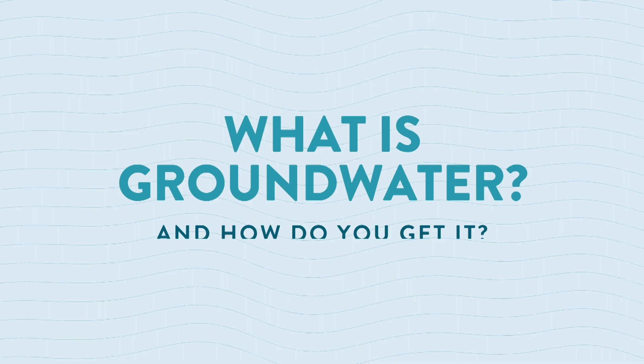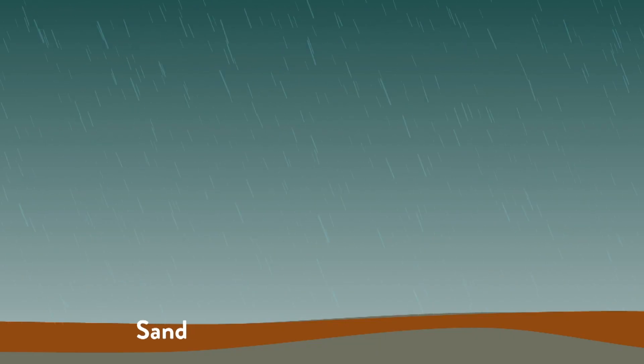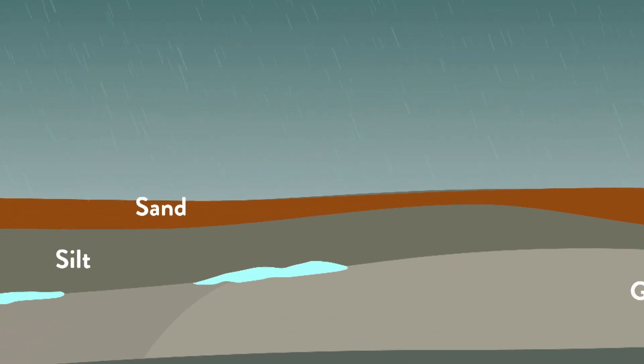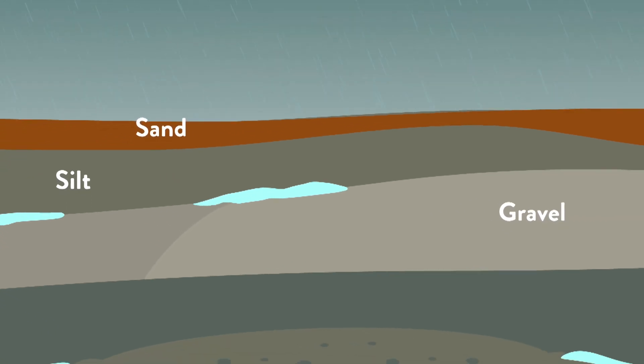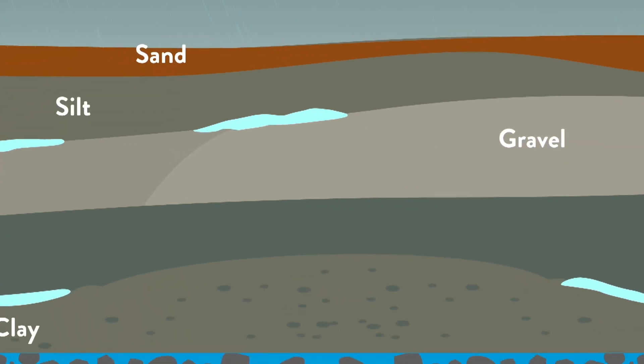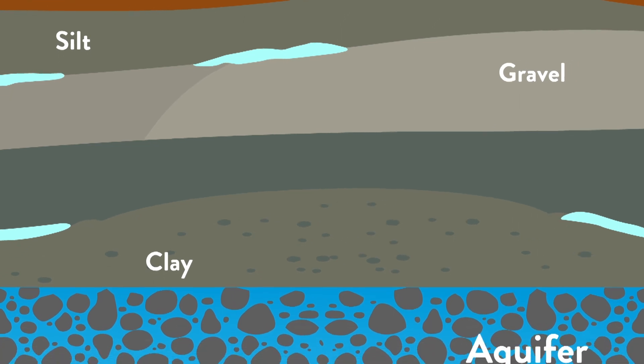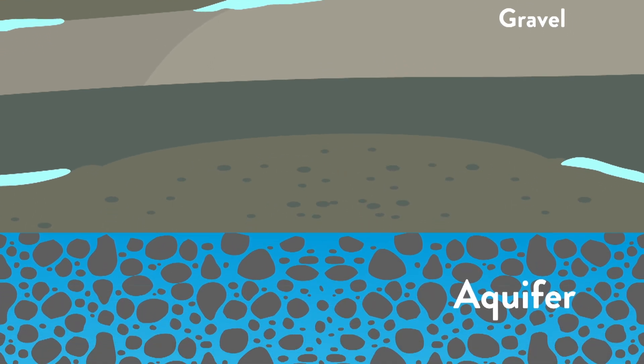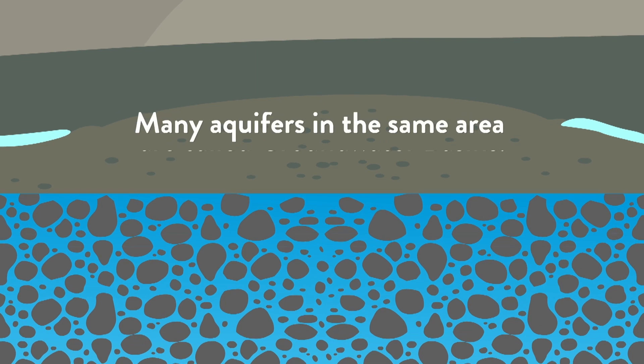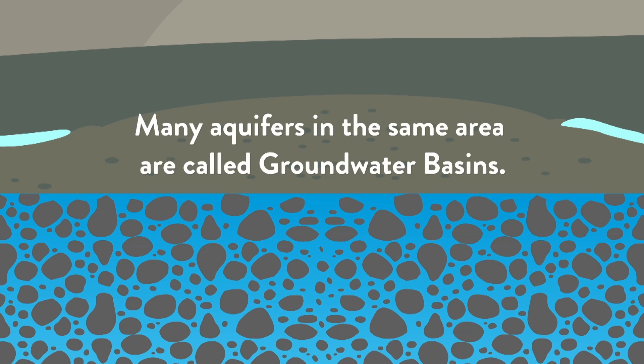What is groundwater? Water from snow and rain seeps into the ground between layers of gravel, sand, rocks, and clay that form very small pockets where water is stored, almost like in a thick wet sponge. These underground sponges are called aquifers, and many aquifers in the same area are called groundwater basins.